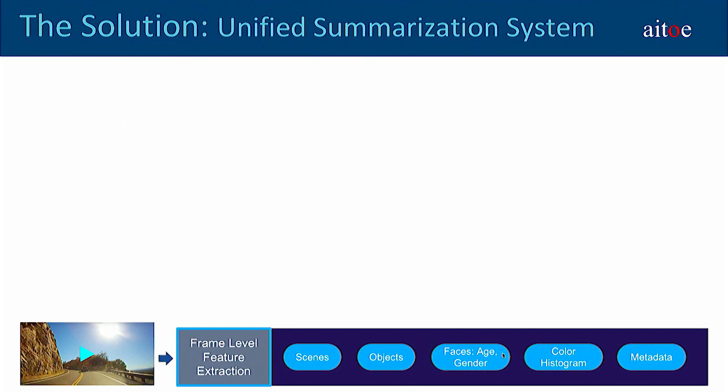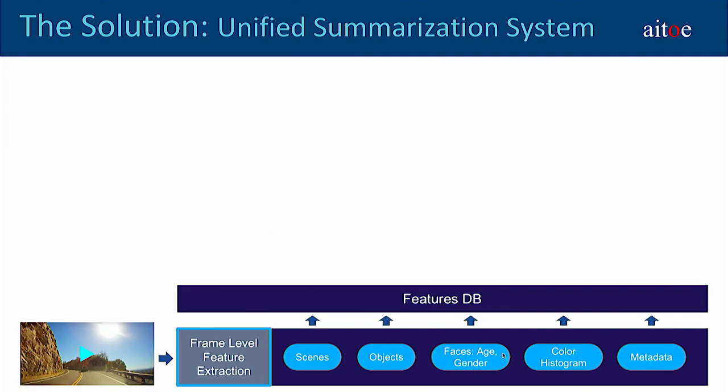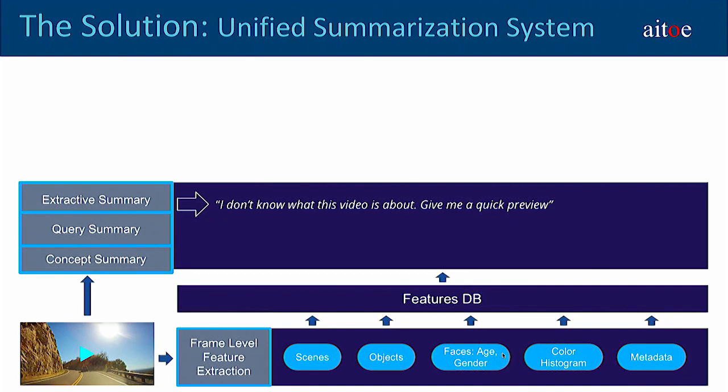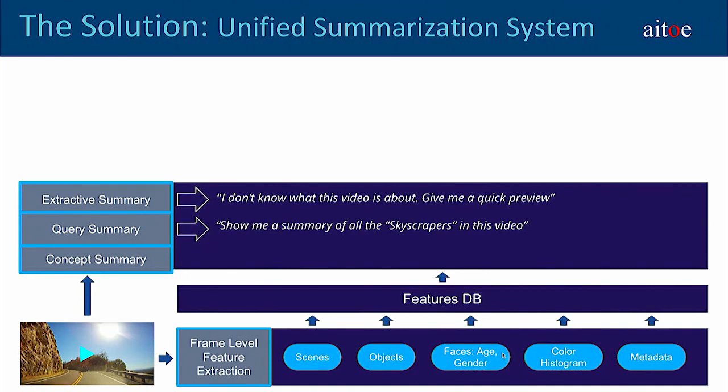Here's how it works. A video is submitted to the pre-processing unit, which does frame-level feature extraction using deep models for scenes, objects, faces, etc. These features get stored in the features database, and then the video and features get submitted to the summary system. The summaries we generate have three flavors: an extractive summary, which is an auto-generated video summary; a query summary, based on user-given input; and a concept summary, which is a summary over high-level concepts like scenes and objects.